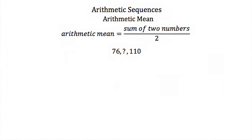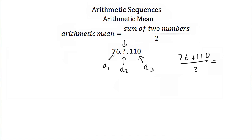So let's say we were given the arithmetic sequence 76, some missing number, and 110, and we wanted to find this missing number. This is a_1. The missing number would be a_2, and 110 would be our third term, a_3. If we want to find a_2, we can use the arithmetic mean — we would just add 76 and 110 and then divide by 2. Now 76 plus 110 is 186. Take 186 and divide it by 2, and you'll get 93. So the second term in our sequence is 93, and our sequence would be 76, 93, and 110.